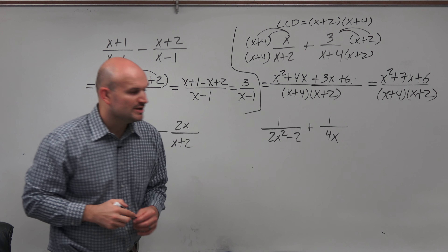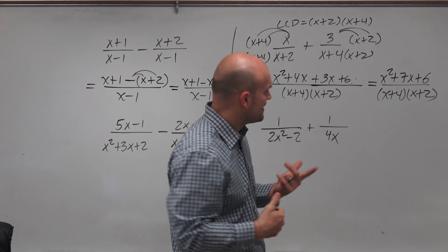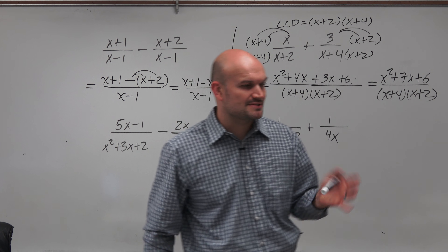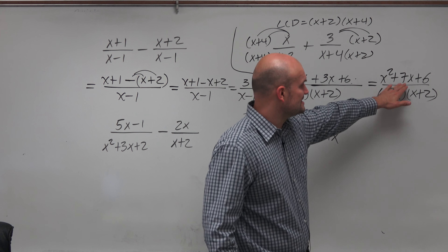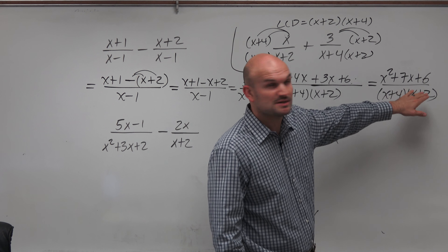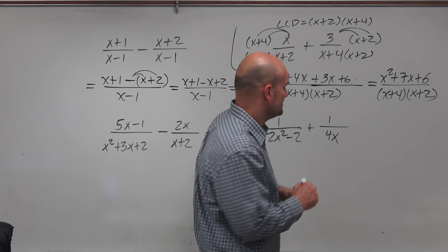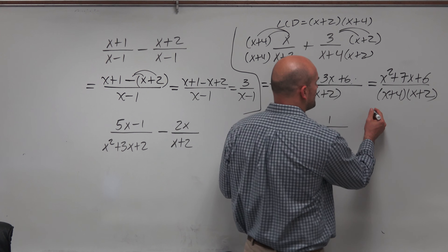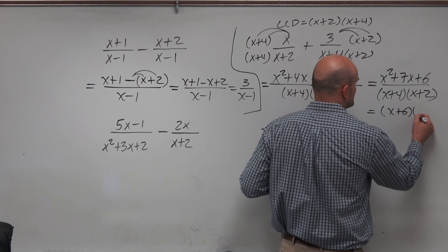We can check if this simplifies further. The numerator x squared plus 7x plus 6 factors into (x plus 6)(x plus 1), but nothing cancels with the denominator (x plus 4)(x plus 2). So the expression doesn't simplify. Whenever you combine rational expressions, always check whether anything in the numerator and denominator can be divided out.